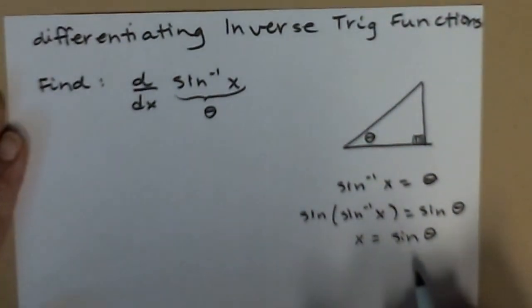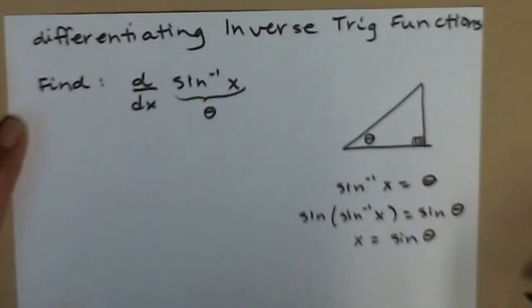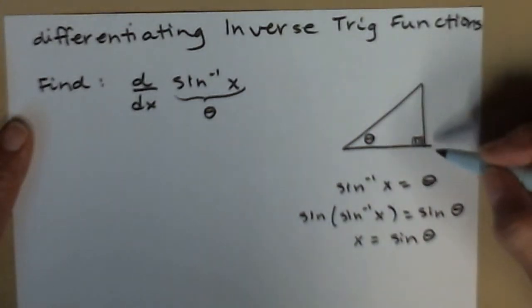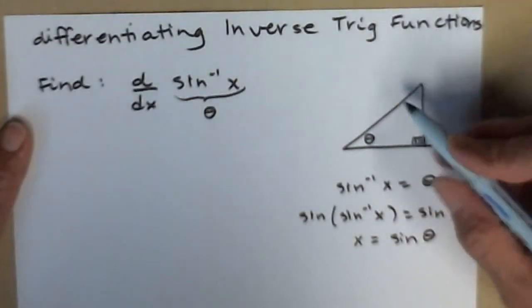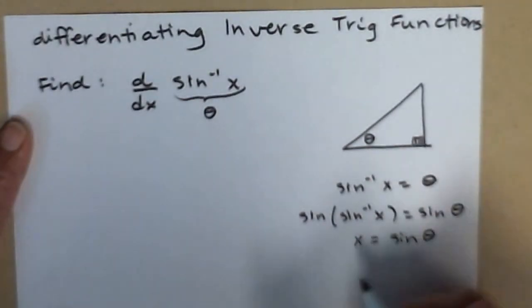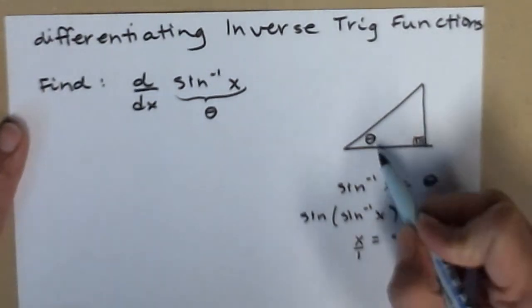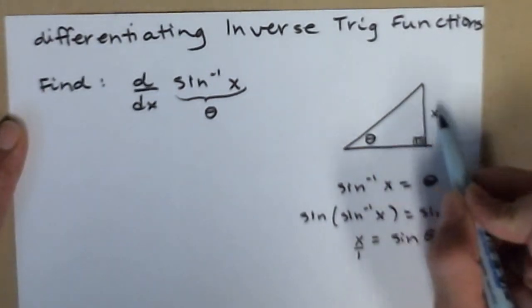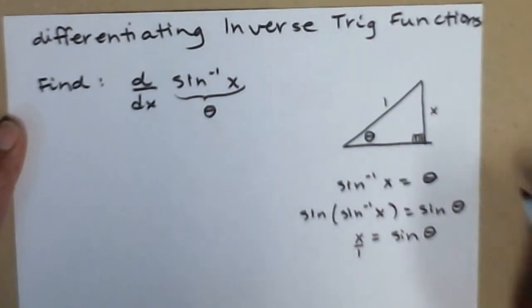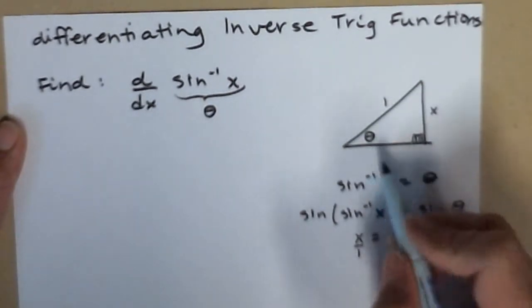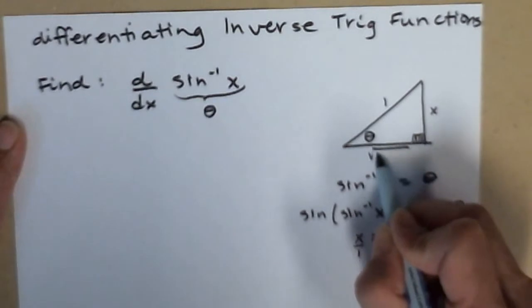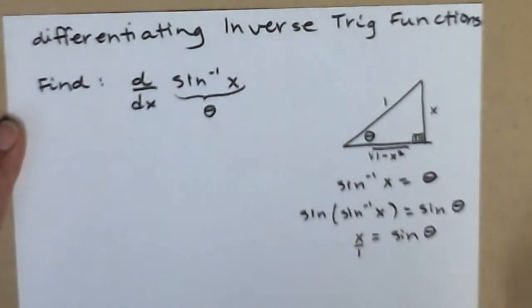The interval is right so that we have a one-to-one function for our inverse. So you could draw a sine graph and just take a chunk that's one-to-one, passes the horizontal line test. Now I'm going to compare my triangle and label the sides so that the sine of theta is the same thing as x. Sine is opposite over hypotenuse. Then I'll use Pythagorean theorem to get my third side length, so that will be one minus x squared under a radical.